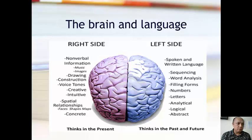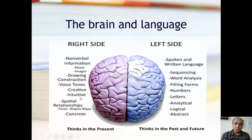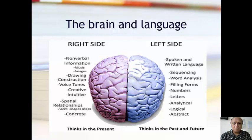This is a picture of brain and language. Your brain is actually divided into two: the right side and the left side. The right side is responsible for non-verbal information, including music and images, drawing, construction, voice tones, creativity, intuition, spatial relationships, faces, shapes, and maps. It also deals with something concrete and tends to think in the present time.